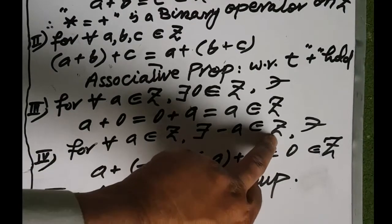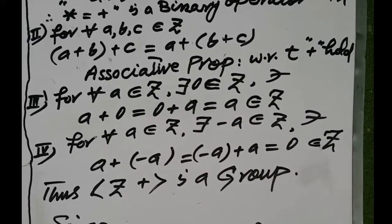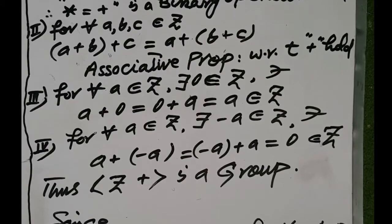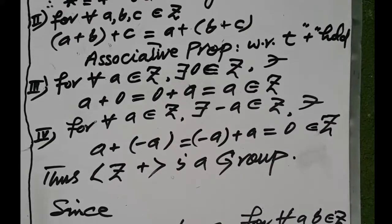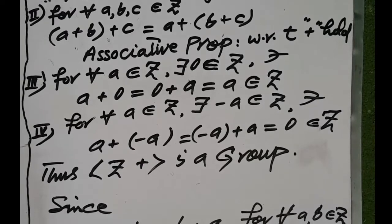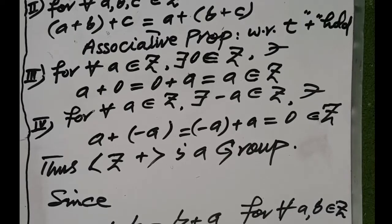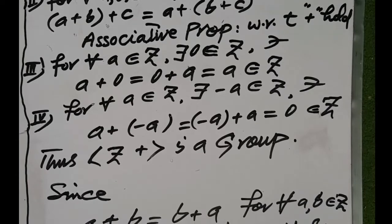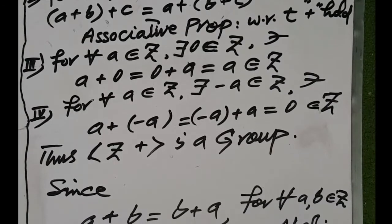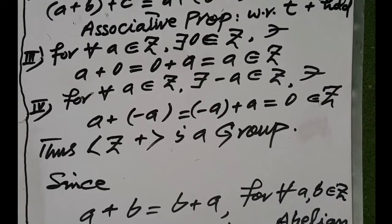For each a belonging to Z, there exists minus a belonging to Z such that a plus (minus a) is equal to (minus a) plus a is equal to zero. That is, in the set Z of all integers, the additive inverse of each element exists. For example, for element 1 there exists minus 1 such that 1 plus (minus 1) equals zero; for element 2 there exists minus 2 such that 2 plus (minus 2) equals zero; and for 10 there exists minus 10 such that 10 plus (minus 10) equals zero.